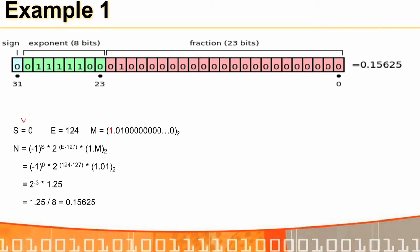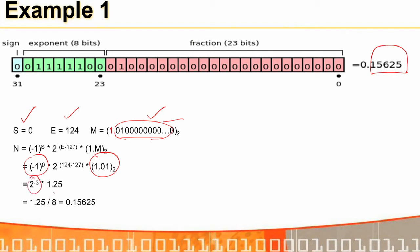For example: S=0, E=124, M=01 binary. The value is minus 1⁰ × 2^(124-127) × 1.01 binary = 2⁻³ × 1.25 = 1.25/8 = 0.15625. So 0.15625 is represented with a 23-bit mantissa, 8-bit exponent, and a sign bit.